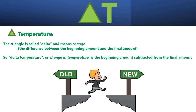Now, delta T. You should get used to seeing a triangle in front of letters, because the triangle is called delta — that's the Greek letter — and it just means "change," the change in something. So the difference between the beginning amount and the final amount. If we're talking about temperature, then delta T, or triangle T, just means a change in temperature.